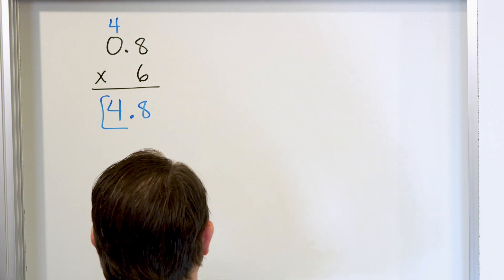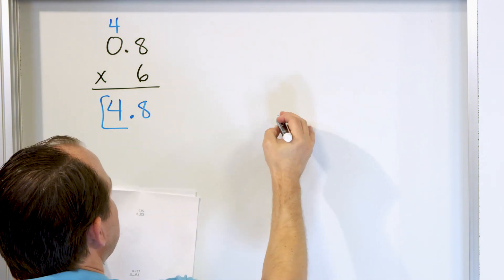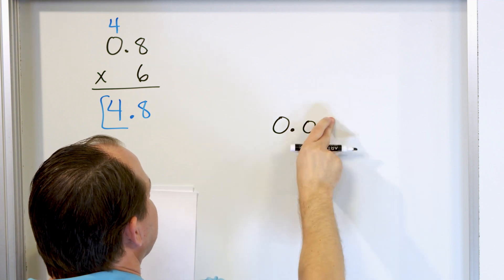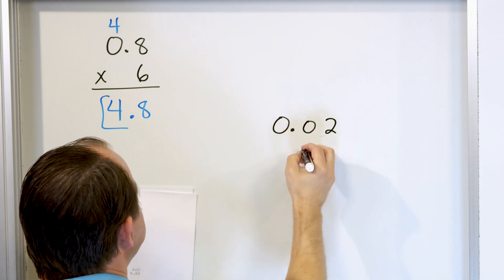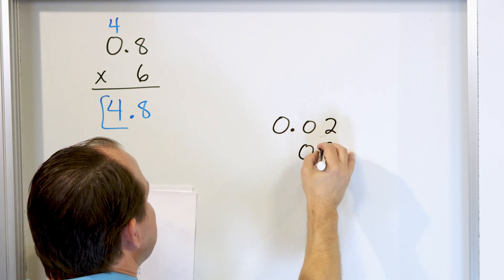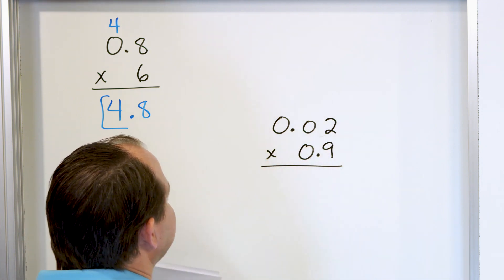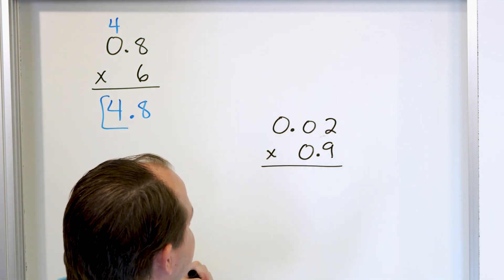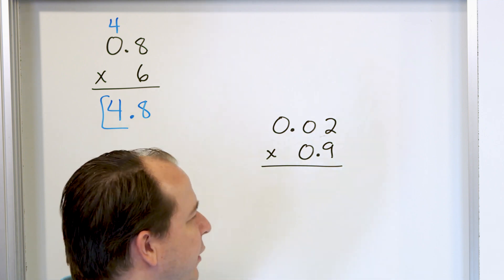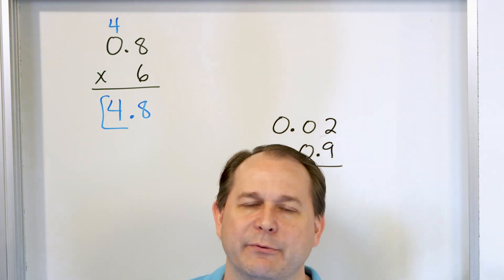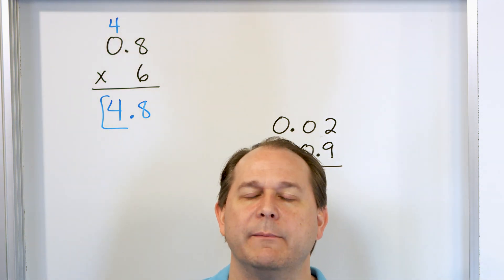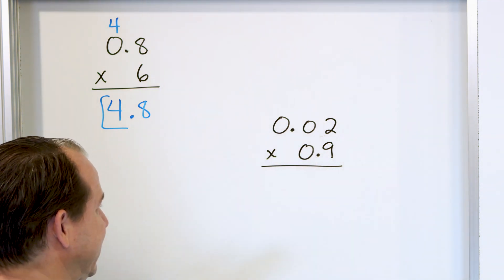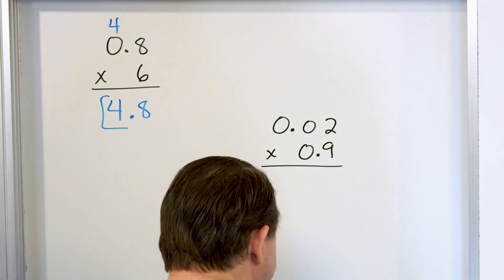Let's take a look at the next problem: 0.02, and we're going to multiply that by 0.9. Notice that the numbers are just put in there and I line them up, pushing them to the right. I do not line up the decimal points. When you add and subtract decimals you have to line the decimal points up, but when we multiply we do not. We just pretend they're basically not there, and ignore them until the final answer.